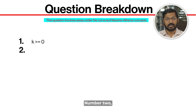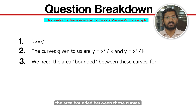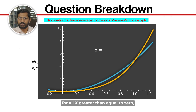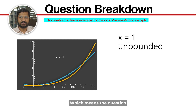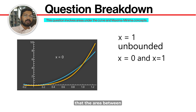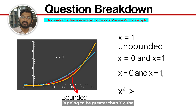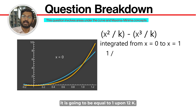Let's note all the conditions given: Number 1, k must always be greater than or equal to 0. Number 2, the curves given are y = x²/k and y = x³/k. Number 3, we are expected to measure the area bounded between these curves. To find this area, we first calculate the points of intersection. Drawing the curves for all x ≥ 0, for x ≥ 1 the area is unbounded, so we focus on the bounded region between x = 0 and x = 1. In this range, x² > x³ for all x between 0 and 1. Integrating (x²/k − x³/k) from 0 to 1 gives us an area equal to 1/(12k).